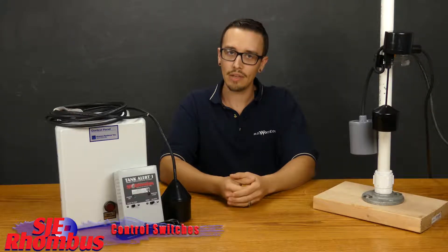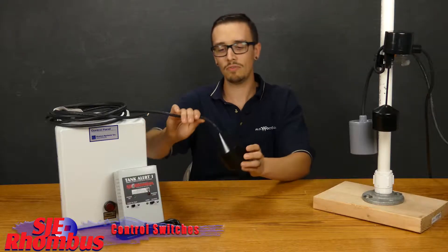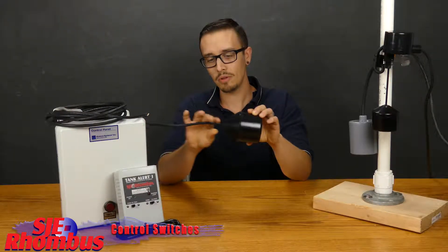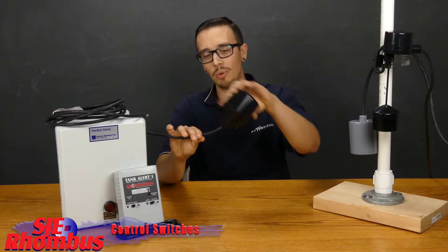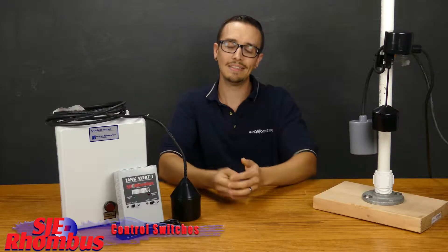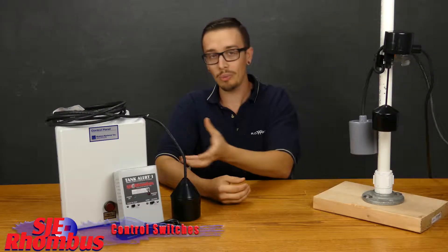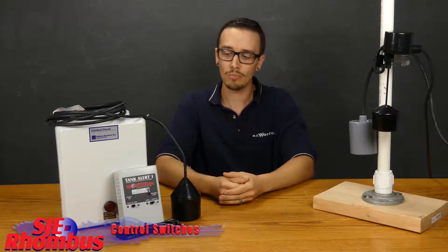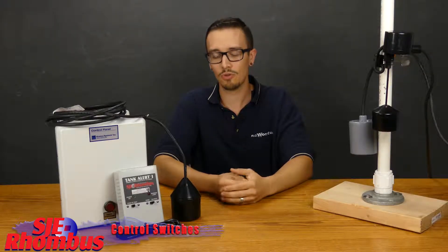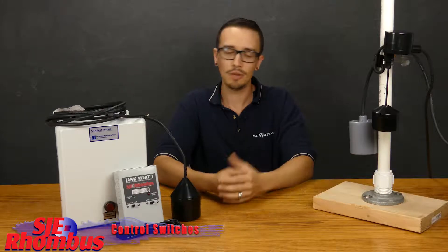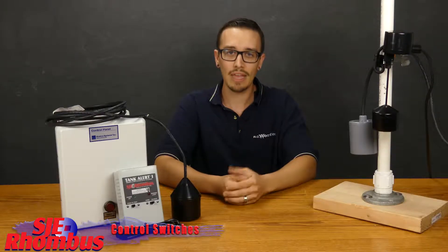Now the thing with control switches is they are typically narrow angle once again. So if you watch the previous video, you saw they only require typically a relatively short tether, but control switches are intended only for use with control panels. They aren't able to take the amperage. Generally speaking, the control switches that SJE Rhombus offers are rated for 5 amps.